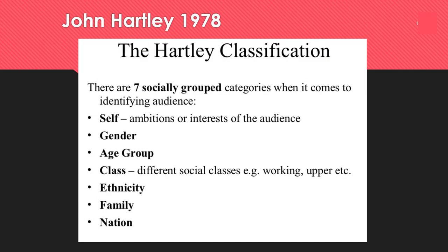John Hartley in 1978 classified seven socially grouped demographic categories. These include gender, age and class, as already discussed. He also considered family — whether people have kids or are a large family. Nation — what country they're from, for example many James Bond viewers are from Britain. Ethnicity — their ethnic background, whether white, black, mixed race, Chinese, etc. And finally the self — the ambitions and interests of the audience.